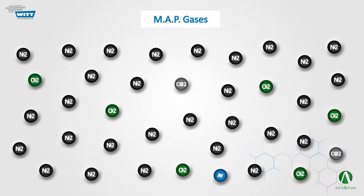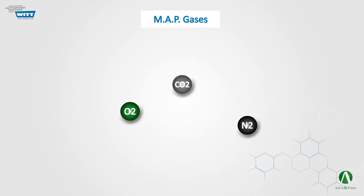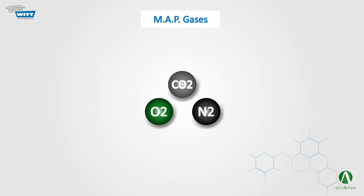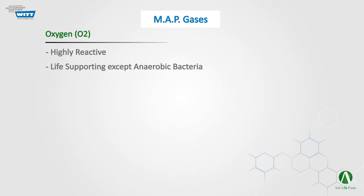What are the gases we use for MAP? You can find all of them in the air. The first one is oxygen, or O2. Oxygen is highly reactive, and most of the common spoilage bacteria, fungi, and chemical and biological reactions require oxygen as well. Therefore, to increase the shelf life of most foods, the pack atmosphere should contain a low concentration of oxygen.